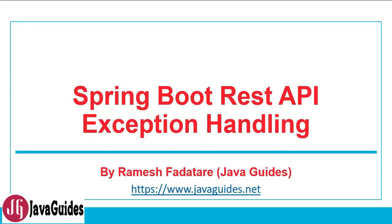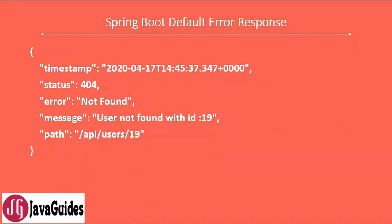Spring Boot provides a good default implementation for error handling for REST web services, but sometimes we need to customize our error response as per the requirement. This is the default error response provided by Spring Boot, and it contains all the required information — for example, timestamp, status, error, message, and path. If the resource does not exist in the database, Spring Boot will create this error response and send it to the client.